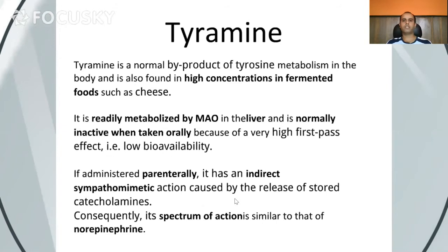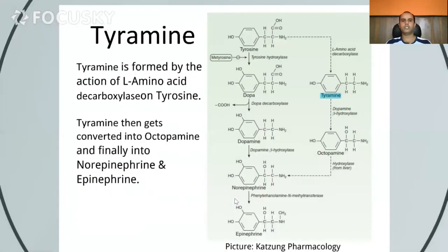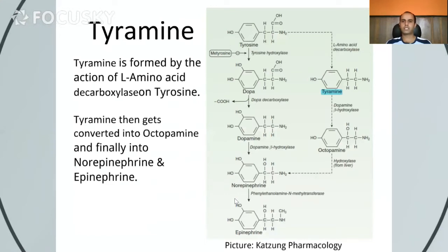Moving on to Tyramine. Tyramine is a normal byproduct of tyrosine metabolism in the body and is found in high concentrations in certain foods such as cheese and wine. It is readily metabolized by MAO in the liver, and it is normally inactive when taken orally due to the high first-pass effect, giving it very low bioavailability. However, when administered parenterally, it has an indirect sympathomimetic action causing release of stored catecholamines. Tyramine is formed from L-amino acid decarboxylase acting on tyrosine, and gets converted into octopamine and finally into norepinephrine and epinephrine.